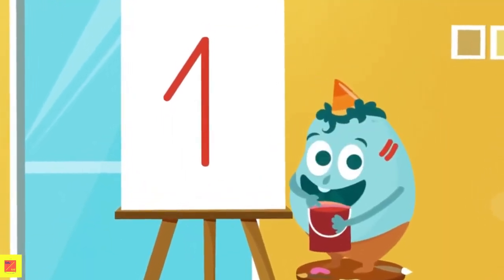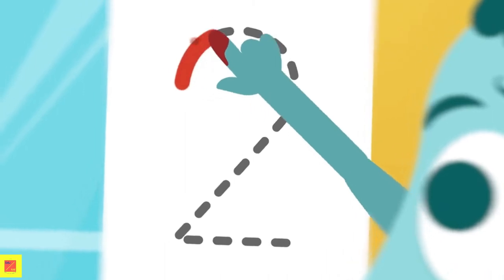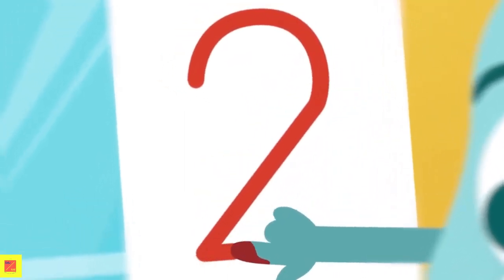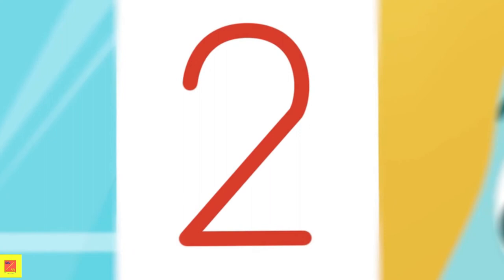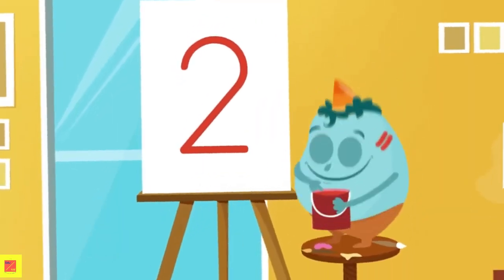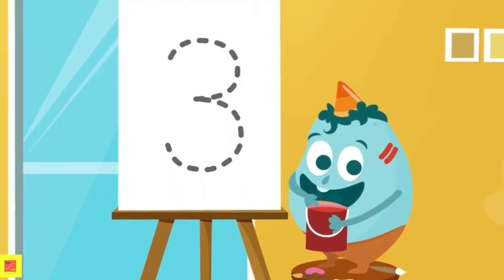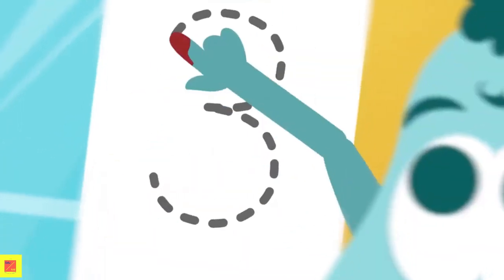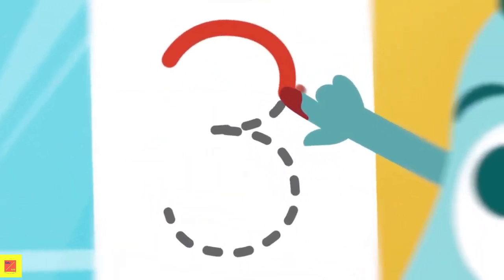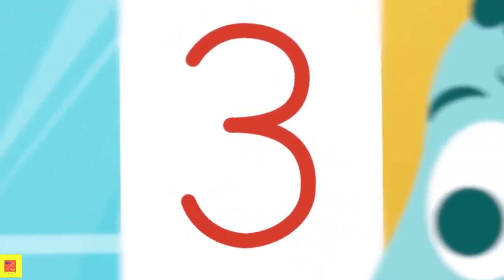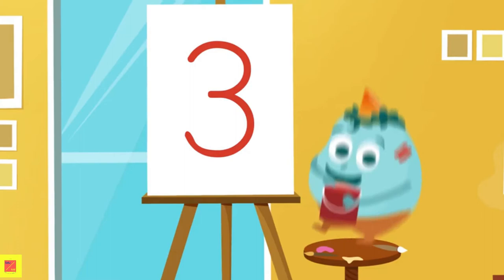Let's see if you can figure out the next one. Let's make a curve like this, and when we get to the bottom, we make a straight line to the right. What number is this? Number 2. Perfect. Make this number like this — a small curve here, and another similar curve here. Can you figure out this number? Number 3. Yahoo.